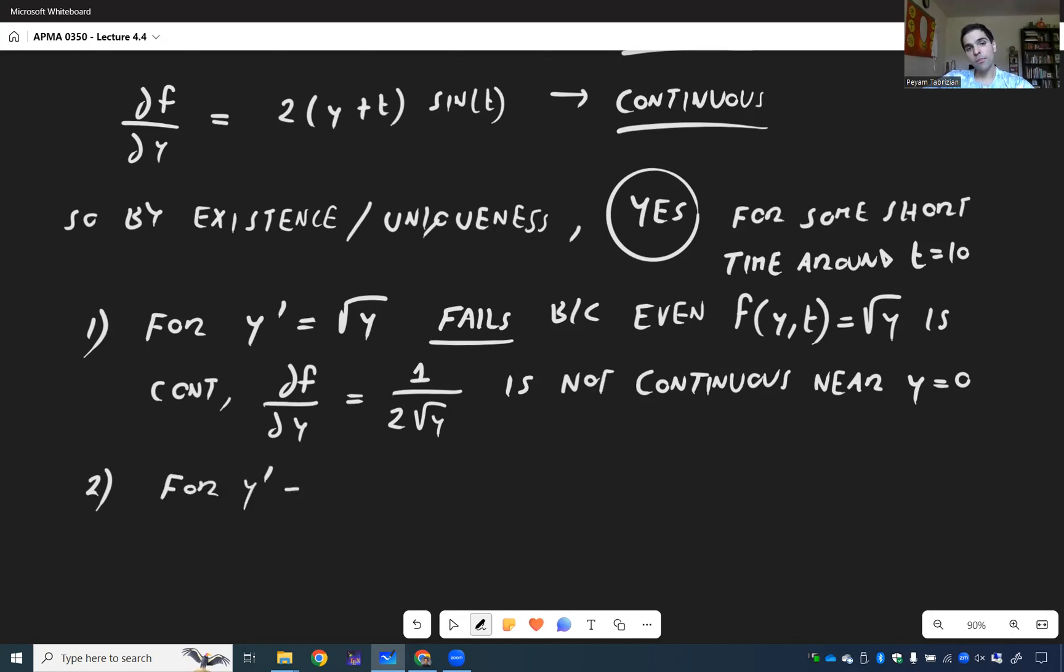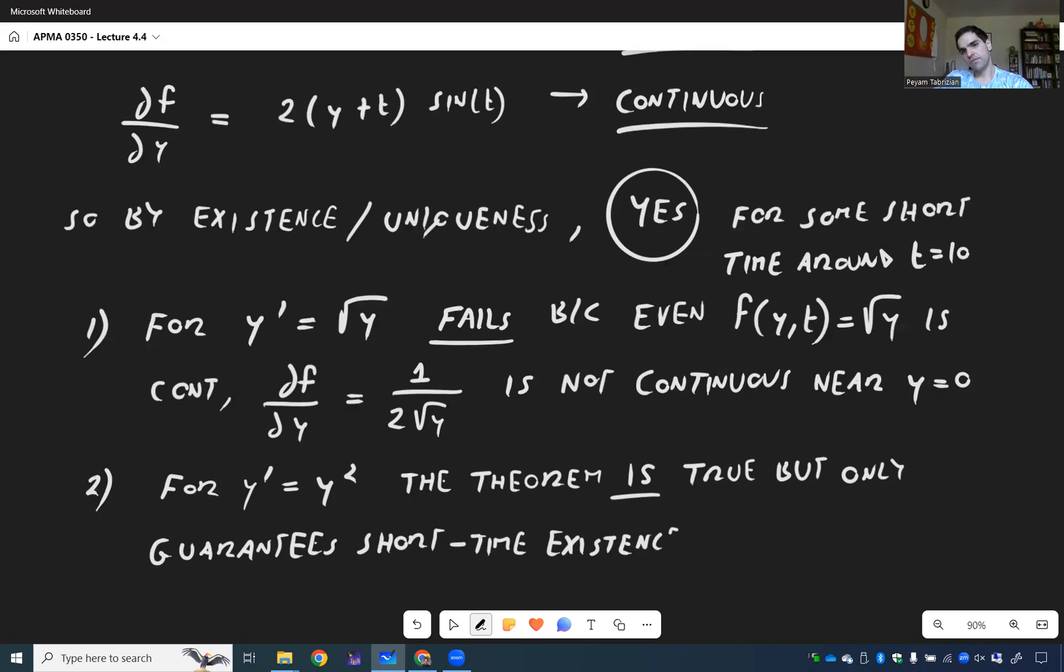And the other example was for y' equals y². So y², well, here, the theorem is true. So y² is continuous, and so is 2y, but remember, the theorem only guarantees short-time existence. So the theorem is true, but only guarantees short-time existence. We're not saying anything about long existence or existence for large t, but there are actually theorems that guarantee existence for a long time as well. But it's beyond the scope of the course.